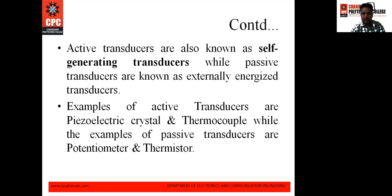Active transducers are also known as self-generating transducers, while passive transducers are also known as externally energized transducers, because passive transducers need an external power source for their function. Examples of active transducers are piezoelectric crystal and thermocouple, while potentiometer and thermistors are examples of passive transducers.